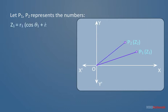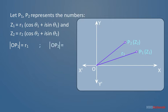Z1 is equal to R1 into cos theta 1 plus iota sin theta 1, and Z2 is equal to R2 into cos theta 2 plus iota sin theta 2, so that mod of OP1 is equal to R1 and mod of OP2 is equal to R2.